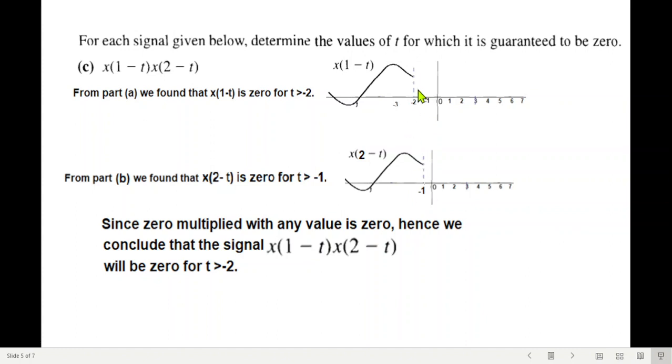And we know since 0 multiplied with anything value will be 0, so like this, 0 multiplying here is 0, also this 0 here multiplying by the signal will also make it 0. Therefore we can say that the multiplication signal will be 0 for t greater than minus 2. So up to this point the signal will be 0. So this is our answer.